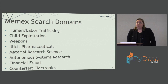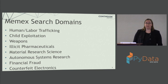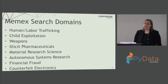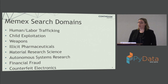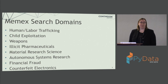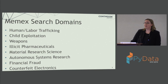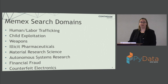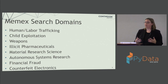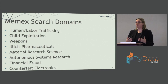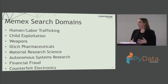We're working on several different domains. All teams are applying these technologies to human labor trafficking, child exploitation, weapons — tracking illegally sold firearms across the internet — and illicit pharmaceuticals. There are also materials research science and autonomous systems research domains, both interesting because we're actually trying to index PDF documents and scientific data — published results from conference proceedings that are not readily available — and provide search tools on top of those.